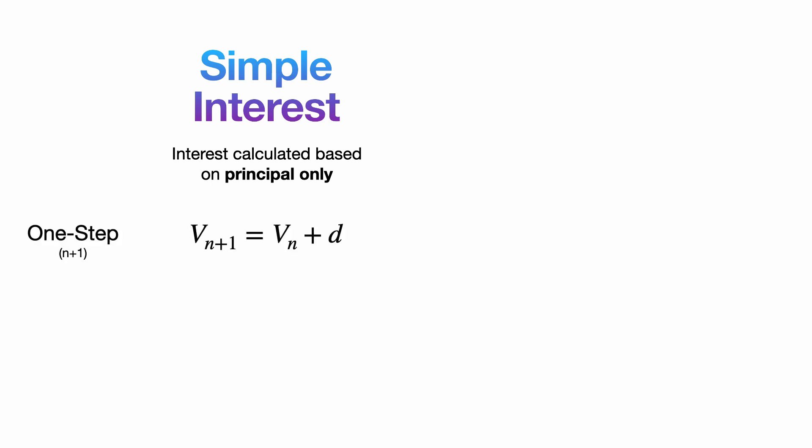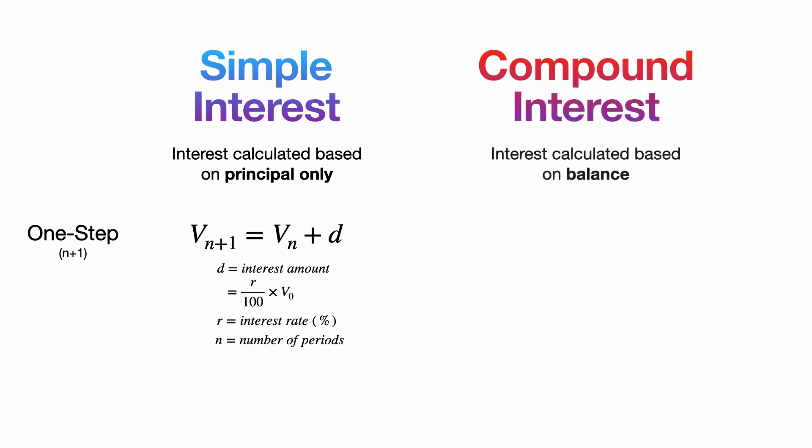In terms of recurrence relations, it's actually pretty similar to the ones from depreciation. For simple interest, remember that the interest amount is calculated only using the principal. We can find next period balance by simply just adding the interest amount to our current balance. For compound interest, interest is calculated based on the current balance using a compounding factor greater than 1, since our current account balance always increases with interest. Here are those handy multi-step formulas if you need to calculate more than one step ahead.